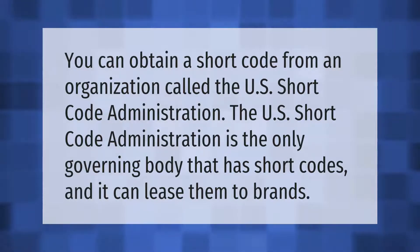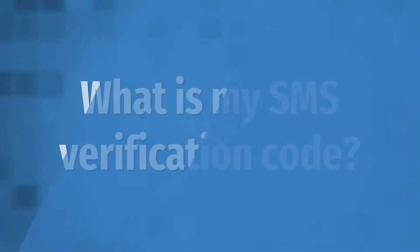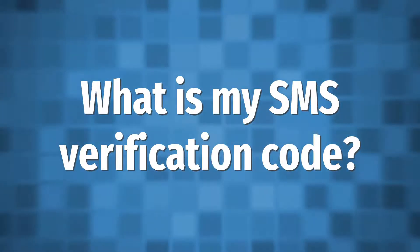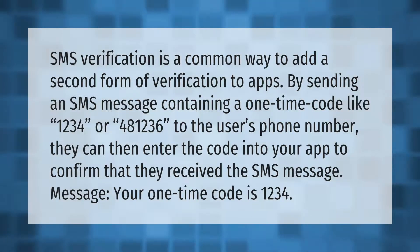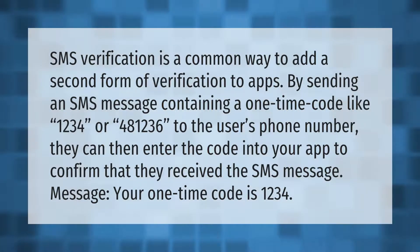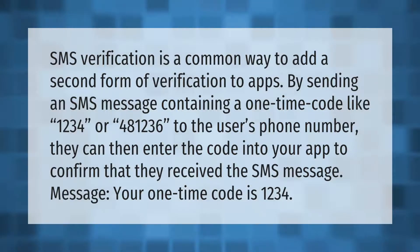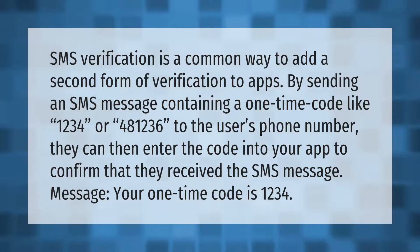SMS verification is a common way to add a second form of verification to apps by sending an SMS message containing a one-time code — like 1234 or 481236 — to the user's phone number. They can then enter the code into your app to confirm that they received the SMS message. For example: 'Your one-time code is 1234.'